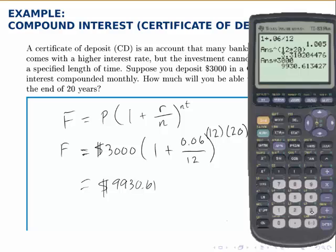The reason I did that was to avoid round-off errors and we'll talk about that in a later example. But for this example we notice that the answer is that after 20 years this account will hold $9,930.61. So it will have more than tripled based on this compound interest process.